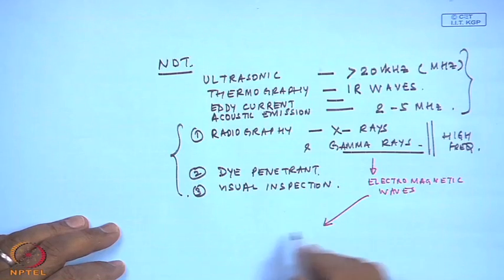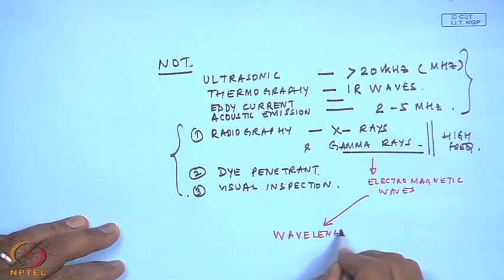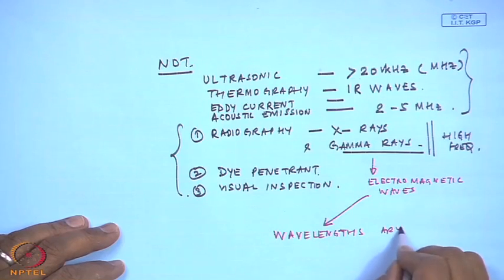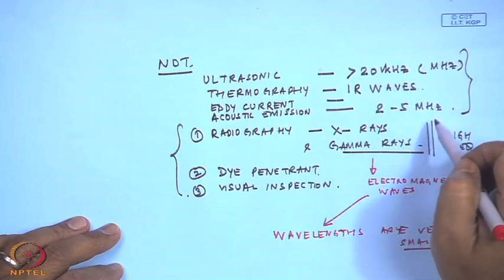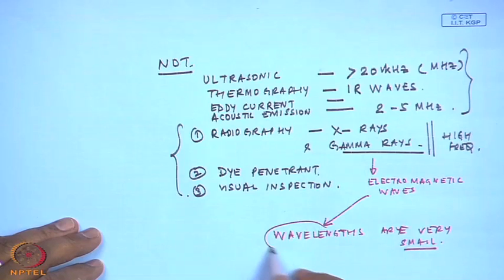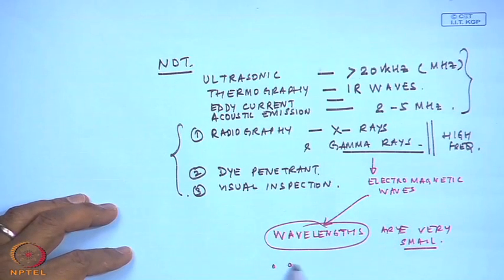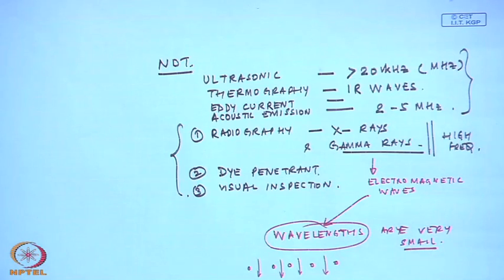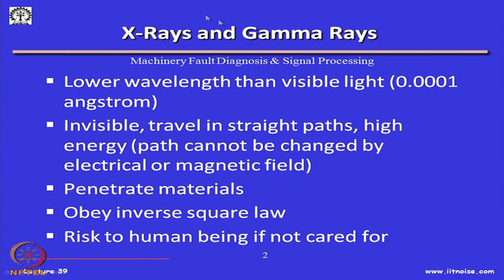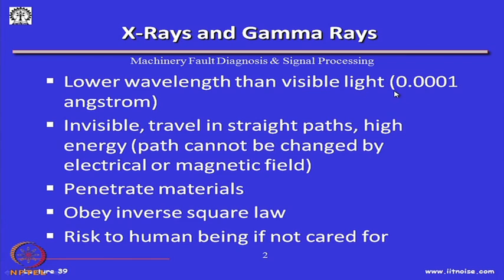They are all electromagnetic waves. However, their wavelengths are very small compared to the wavelengths of IR waves, ultrasonic, and acoustic emission. Because the wavelengths are small — in fact smaller than the interatomic distances — they carry high energy. The characteristics of x-rays and gamma rays are that they have a much lower wavelength than visible light. Visible light has a wavelength from 4000 to 7000 angstrom and infrared somewhere between 9000 to 14000 angstrom, but x-rays and gamma rays are on the other end of the spectrum.